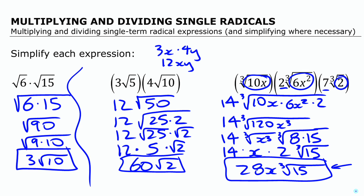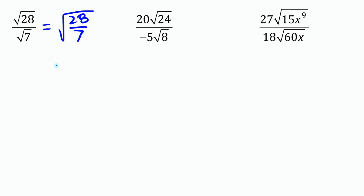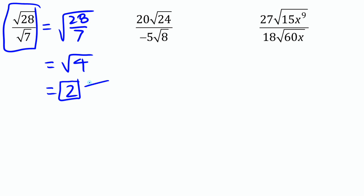Now let's look at some dividing. If we have two radicals divided, we can use a single radical to write the two together. Root 28 divided by root 7 is the same as root of 28 divided by 7. Since those divide nicely, we can write it as root 4, and root 4 is 2. This expression is actually equal to the rational number 2. The key concept is that when dividing two radicals, you can write them under one single radical sign and divide the numbers.